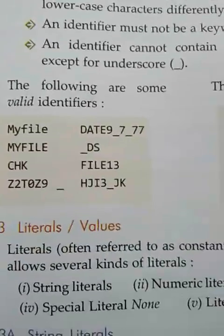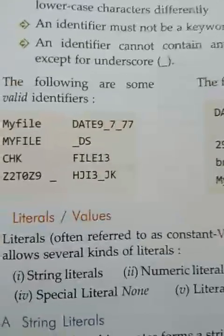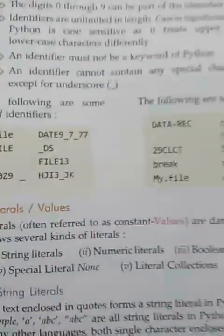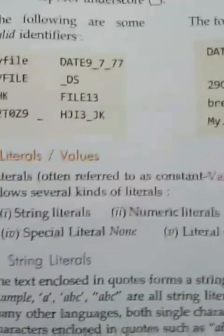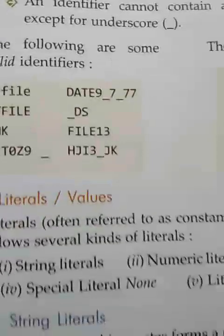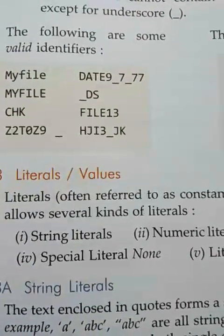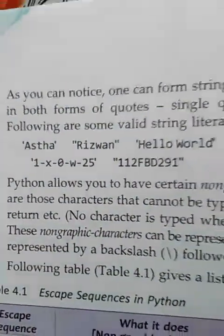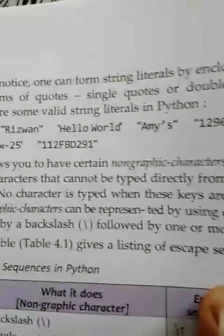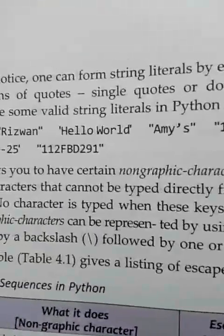The third category is literals. Literals are also referred to as constants — these values do not change during the execution of a program. Literals may be string literals, numeric literals, boolean literals, special literals, and literal collections. A string literal is text enclosed in single quotes, double quotes, or triple quotes. It can contain one or more characters. For example, 'r', 'swan', 'hello world' are valid string literals. Numbers inside single or double quotes are also treated as string literals in Python.